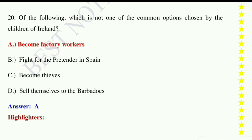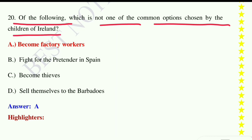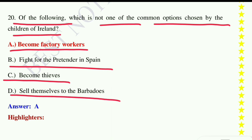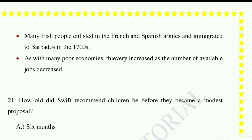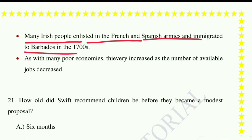Question number twenty: Of the following, which is not one of the common options chosen? Option A: become factory workers, option B: fight for the Pretender in Spain, option C: become thieves, option D: sell themselves to Barbados. The correct answer is option A, become factory workers. Many Irish people enlisted in the French and Spanish armies, immigrated to Barbados, and as with many poor economic situations, thievery increased as the number of available jobs decreased.